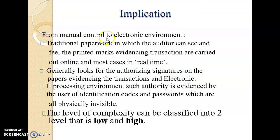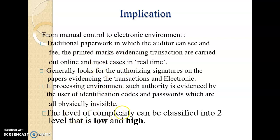Moving from manual control to an electronic environment: in traditional paperwork, auditors can see and feel the printed marks as evidence. Transactions are carried out and documented in most cases in real time. In a manual environment, the auditor looks for authorized signatures on paper evidence. In an electronic environment, such authority is evidenced by user identification codes and passwords, which are physically invisible compared to the traditional approach.